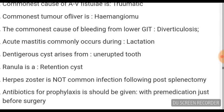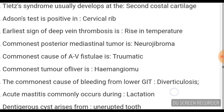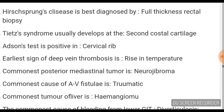Acute mastitis commonly occurs during lactation. Common cause of bleeding from the lower GI tract is diverticulosis. The most common tumor of the liver is hemangioma. The common cause of AV fistula is traumatic. The most common posterior mediastinal tumor is neurofibroma.